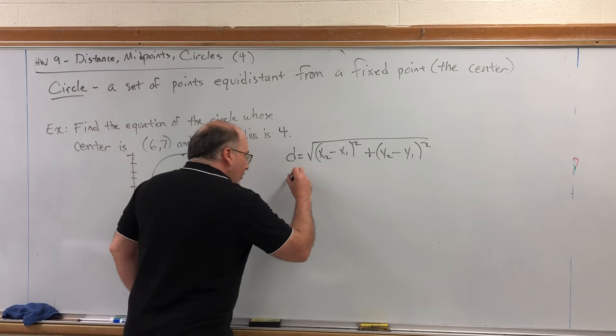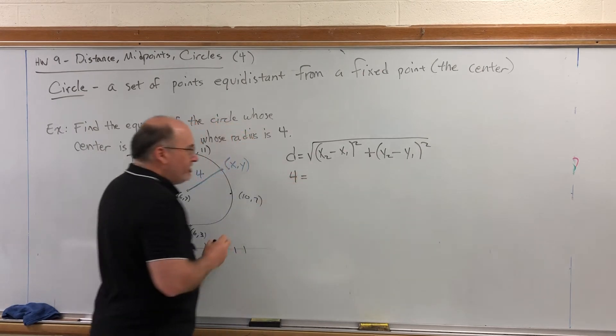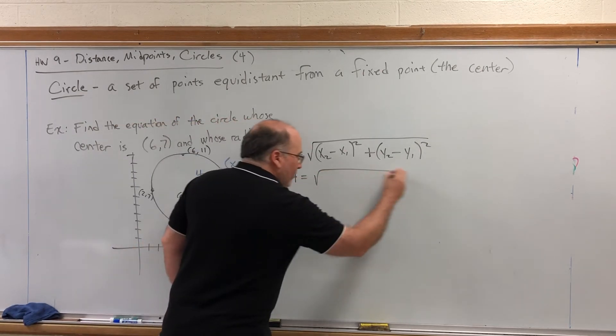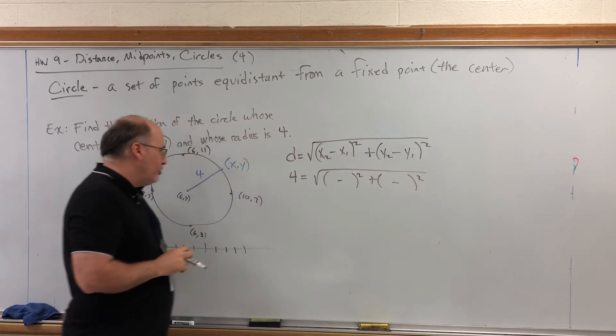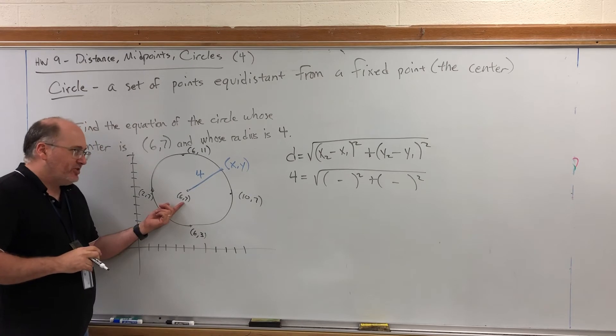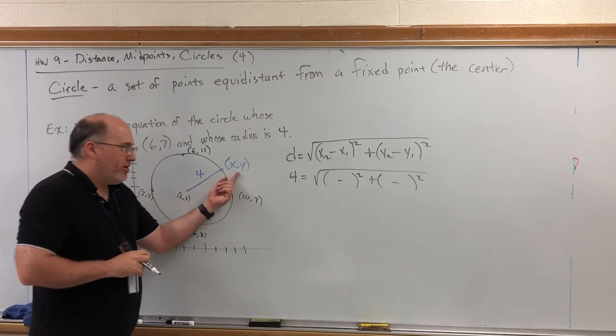So, I can put four right here for the distance. Now, what can I put for the x's and the y's? Well, one of the two points I know exactly is (6,7). The other point is generic, x comma y.